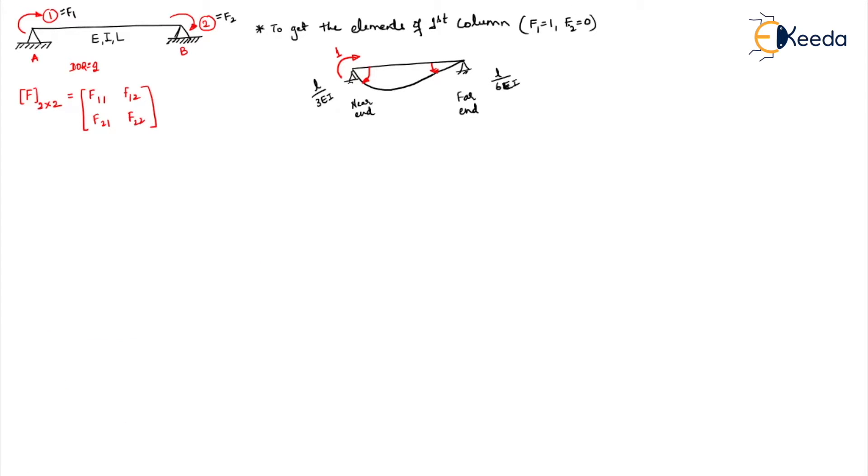Now if you want to write the flexibility elements, what are those? F1,1 and F2,1. You are applying unit force in the direction of the first coordinate and trying to see what are the displacements in the first and second coordinate. In the first coordinate, this is clockwise, so here also your displacement is happening in clockwise direction, so it will be plus L by 3EI. Coming to your second coordinate, this is clockwise here, whereas your displacement is happening in anticlockwise direction, so it will be minus L by 6EI.